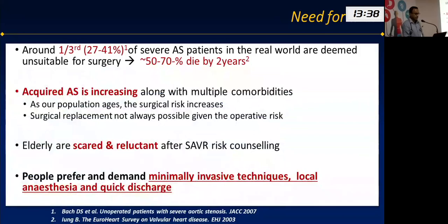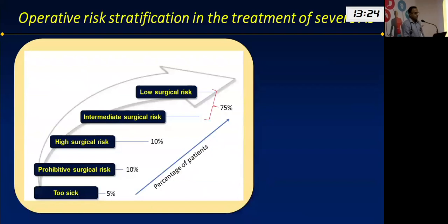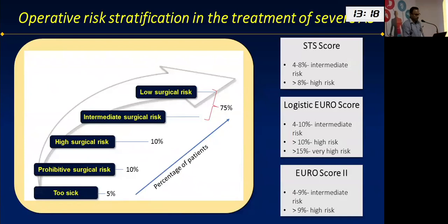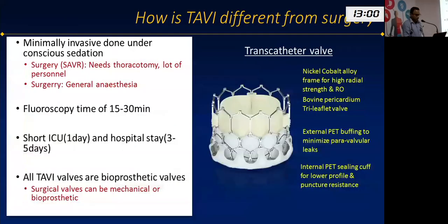The reason many patients don't get surgery is that they have multiple comorbidities, and as age increases, risk factors also increase, making surgery more complicated. Other factors include patient preferences. All patients with AS can be classified into several risk groups based on surgical risk scores, ranging from low to prohibitive surgical risk. About 25 to 30 percent are at high risk or are even inoperable — these are the patients who benefit from TAVI.